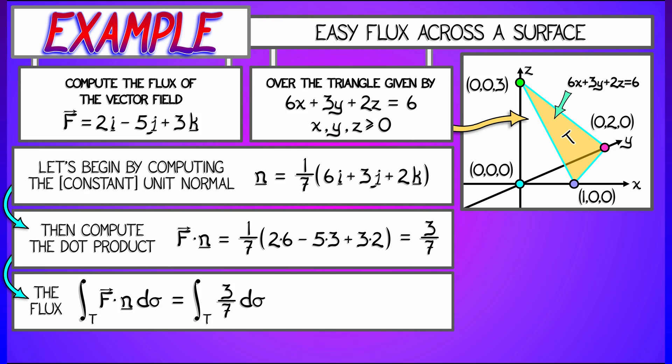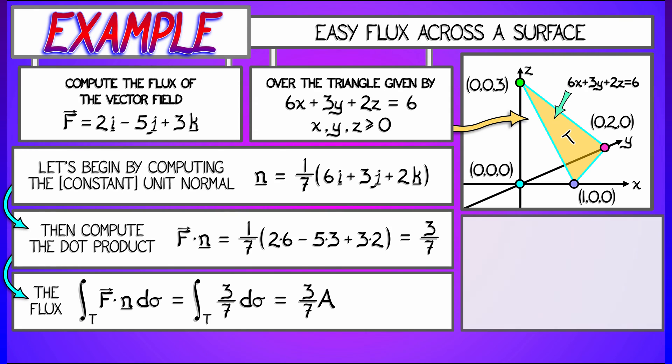So to compute the net flux, we simply integrate this 3/7ths with respect to surface area over this surface. But this is really just 3/7ths times the net area of this triangle. There's no difficult integration to do. All we have to do is remember how to compute the area of a triangle in 3D.